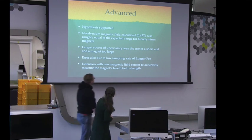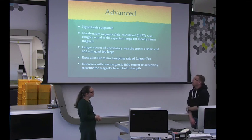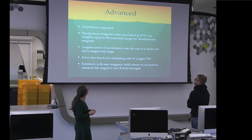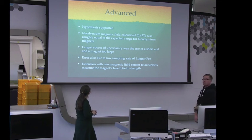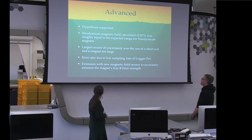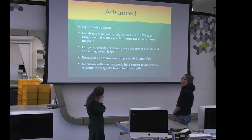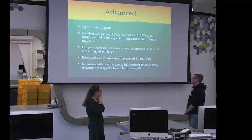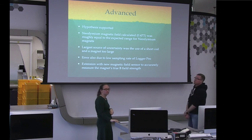And then in our advanced experiment, what we did in the last part, the hypothesis we had was supported. And the neodymium magnet field was calculated to be 0.47 Tesla, and that was roughly equal to the expected range for that sort of magnet. And the largest source of uncertainty was the use of a short coil, and the magnet was fairly large compared to the coil. And the error was also due to a low sampling rate of the Logger Pro. And an extension here would probably be to do it with a new magnetic field sensor, so that we can accurately measure the magnet's B field and then basically compare that to what we measured during our experiment.